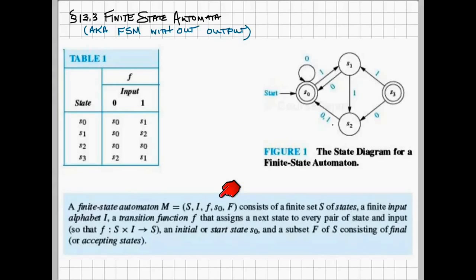S0, which is the initial state of the machine. And finally, F, which is a subset of states. F are considered the final or accepting states of the machine.